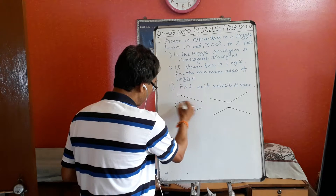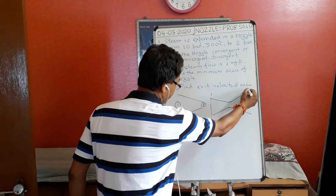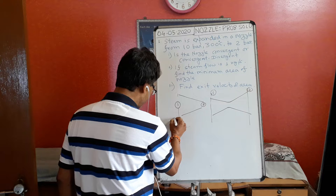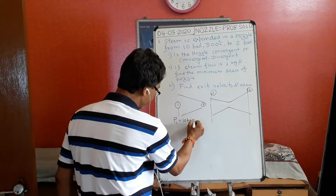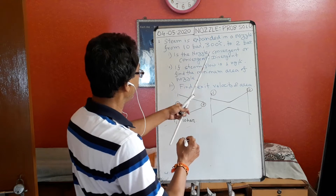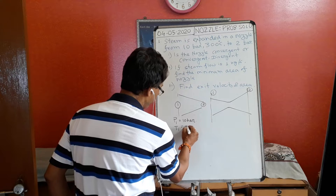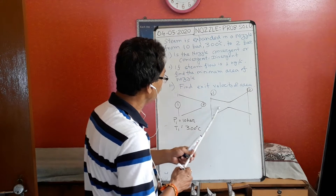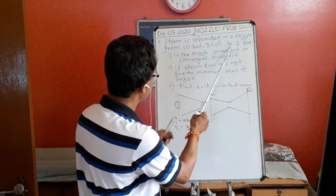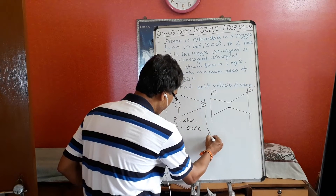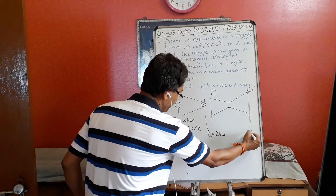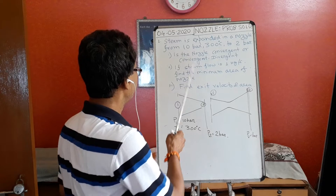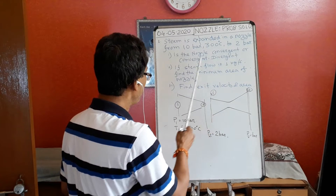For a convergent nozzle, point one is the entry and the exit is point two. The given data is: initial pressure P1 is 10 bar, temperature T1 is 300 degree centigrade, and the steam expands to exit pressure P2 equals 2 bar. The first question is: is this nozzle a convergent nozzle or a convergent-divergent nozzle?